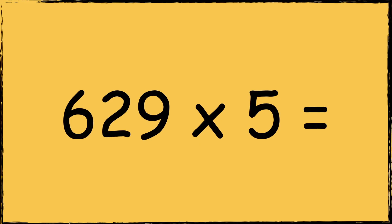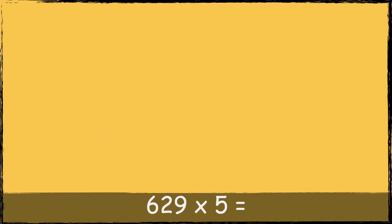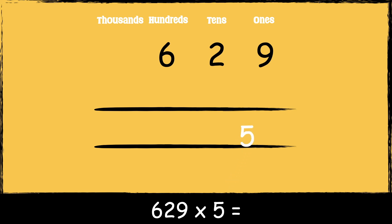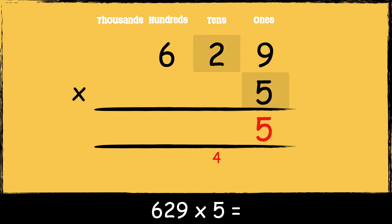Here's the last calculation: six hundred and twenty-nine times five. First we make sure the numbers are lined up accurately. The number 629 has nine ones, two tens, and six hundreds. The number five has five ones. Now that we're set up, we're ready to multiply. First we multiply five by nine: five times nine is forty-five. We carry the four below in the tens column as it represents four tens. Now we multiply five by two tens: five times two is ten, add four tens gives fourteen. We carry the one below in the hundreds column.